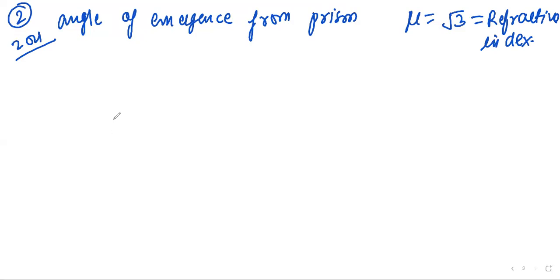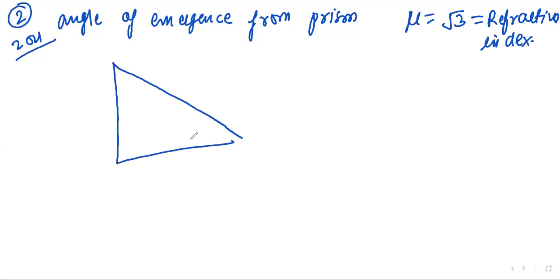When any ray of light falls normally on a surface, it does not face any deviation. In this triangle, light is incident with angle A = 30°, angle B = 60°, and angle C is the remaining angle.